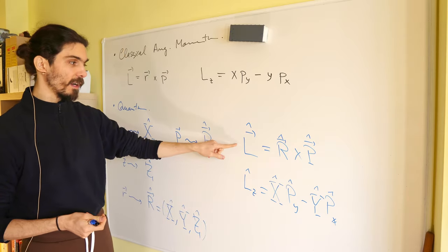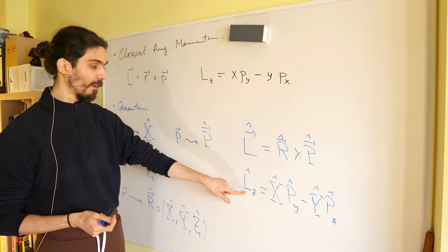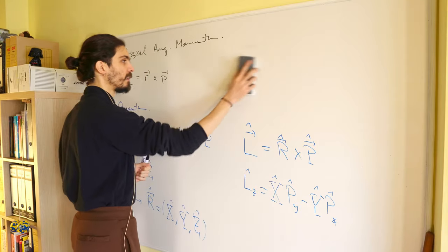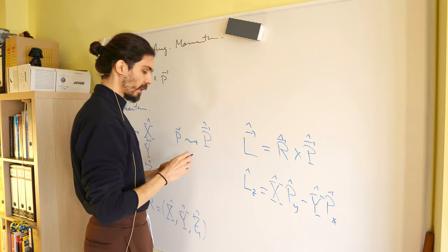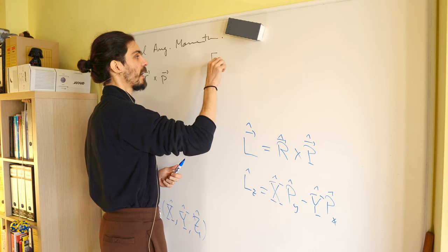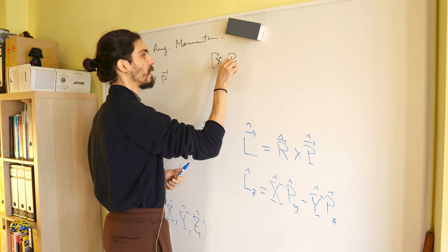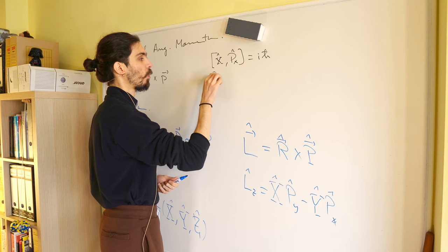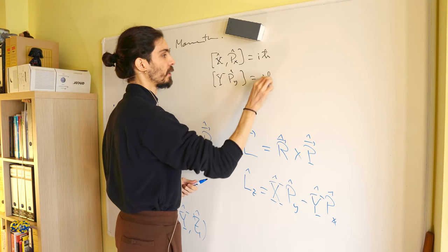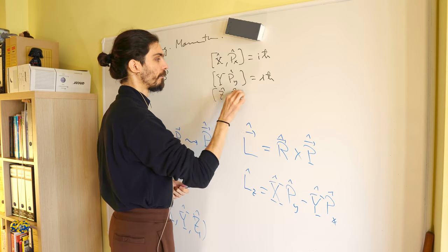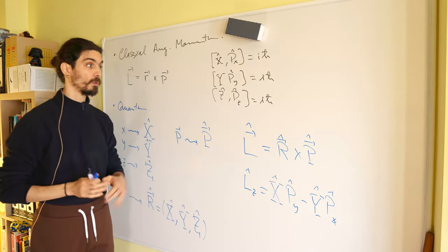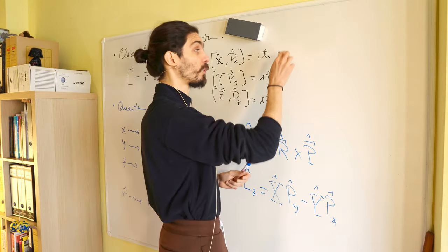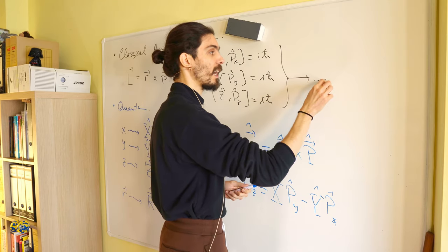Knowing these definitions and the canonical commutation relations — that [X, px] = iℏ, [Y, py] = iℏ, and [Z, pz] = iℏ — from these relations and the definitions of the angular momentum components, we can derive the commutation relations between the components of this vector. We won't do the full calculation here, as this is just a summary of ideas, but after the calculations you can prove these relations.